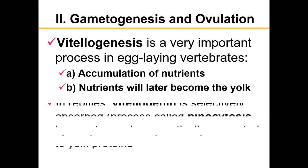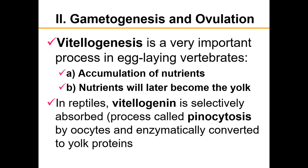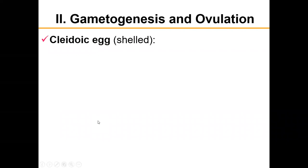Vitellogenesis — referred to here as betalogenesis — is an important process in all egg-laying vertebrates. It involves the accumulation of nutrients in the cytoplasm of the developing egg; these nutrients later become the yolk. In reptiles, vitellogenin is selectively absorbed by oocytes through a process called pinocytosis and enzymatically converted to yolk proteins. The first phase is usually slow with little ovum growth, but during the last phase, ovum growth is much more rapid.